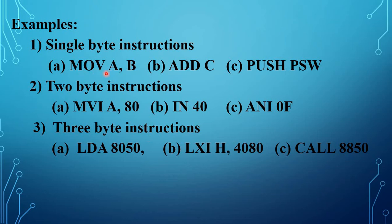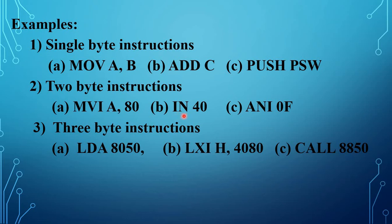Examples of single-byte instructions: MOV A, B; ADD C; and PUSH PSW — here there is no data or address, only register names. For two-byte instructions: MVI A, 8-bit data — first byte is MVI opcode, second byte is data. IN port address — first byte is IN opcode, second byte is the port address. ANI 0F — first byte is ANI opcode, second byte is 0F, which is 8-bit data.